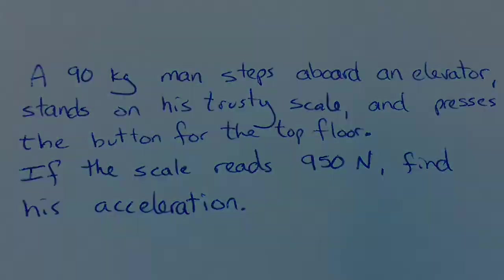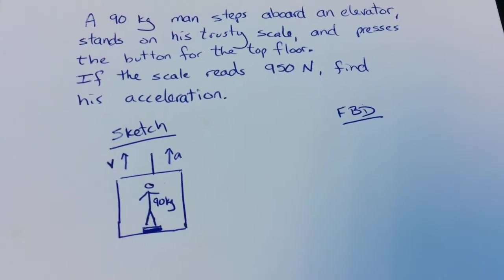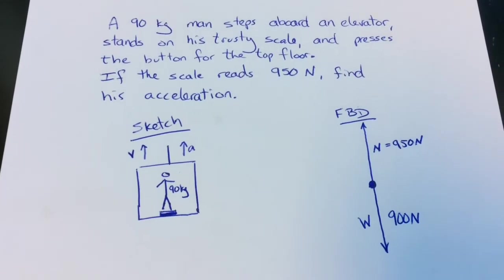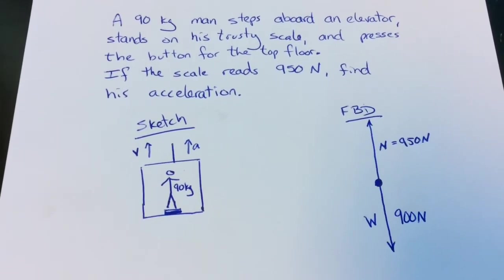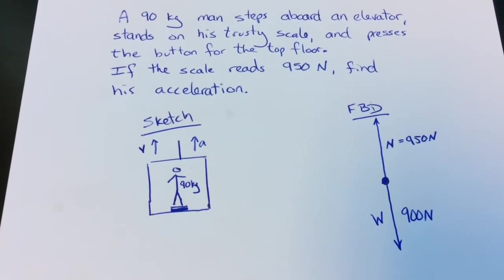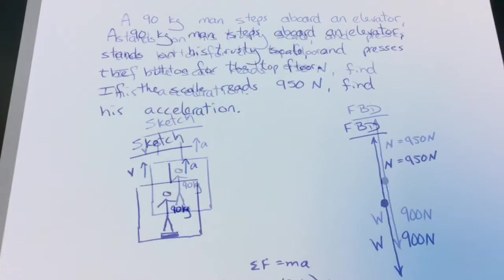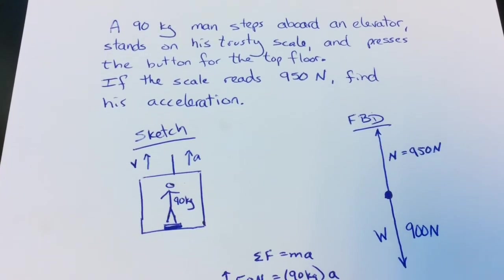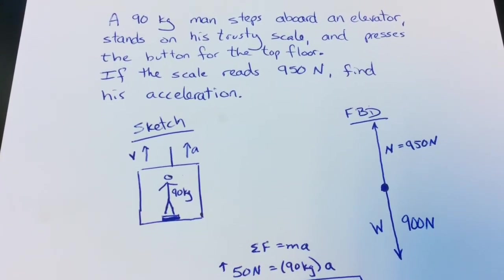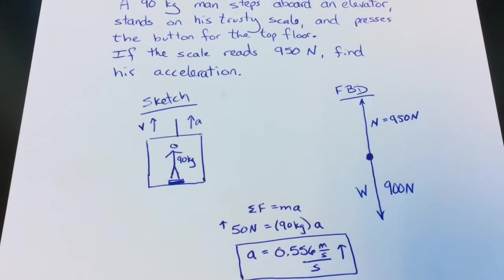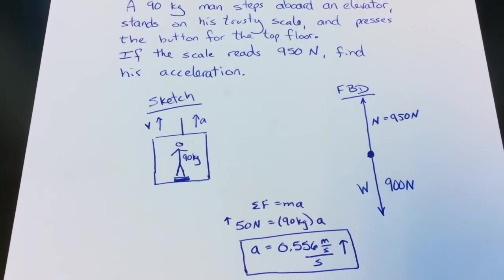A good sketch always helps. So there's the guy standing on the scale. Velocity is up and acceleration is up. That's what counts. Acceleration is up. Which means that 950 newtons, that's the up force. 900 newtons is the down force and the net force is 50 newtons. And that's what we're going to put into Newton's second law. 950 newtons minus 900 is 50 newtons. Solve it. You get 0.556 meters per second every second up.